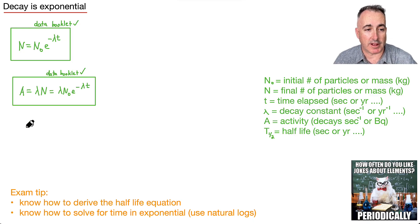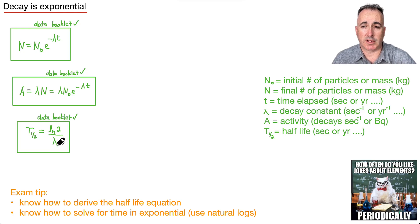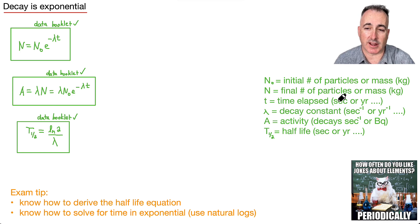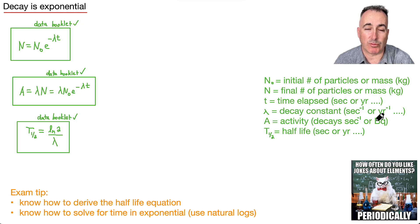And finally, we have the equation for half-life: T½ equals the natural log of 2 divided by lambda. About the units — time can be in seconds, years, days, or minutes, and the decay constant will match the time unit, so it'll be seconds to the minus 1 or years to the minus 1, and so on. Activity is measured in decays per second, or becquerels. Half-life will likewise be in seconds, days, minutes, or years.